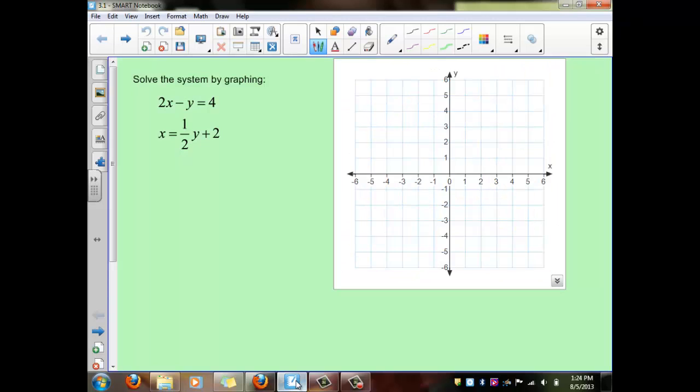So to solve this one by graphing, let's get them both set equal to y so we can graph them easier. So looking at this first one, if we subtract over the 2x, we'll have negative y equals 4 minus our 2x. Divide everything by negative 1. So if we graph that, start here and go up 2 over 1.